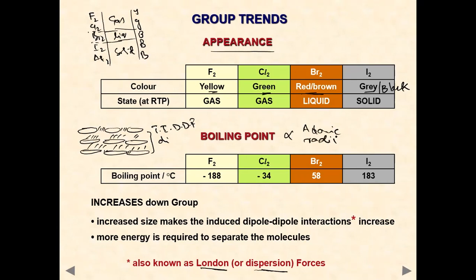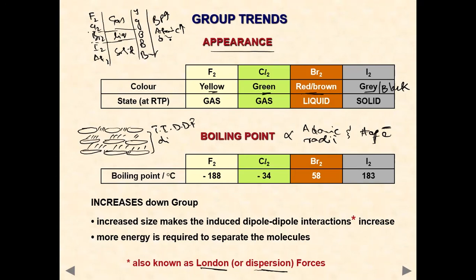Going down the group from fluorine to iodine: atomic radii increase, the number of electrons around the atom increases, and boiling point increases. Appearance also changes — the intensity of color increases and the physical state changes from gas to liquid to solid. Increased size leads to stronger induced dipole dispersion forces, meaning more energy is required to separate the molecules.